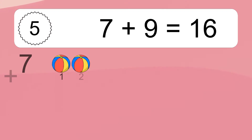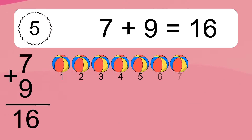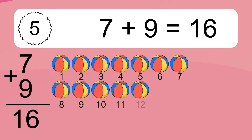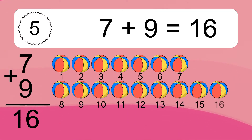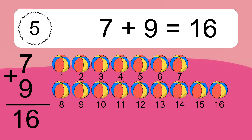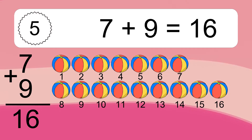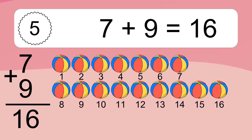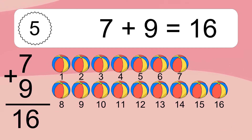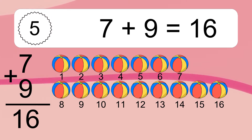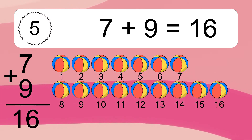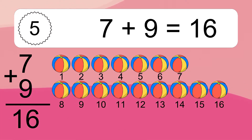7 plus 9 equals what? 7 plus 9 equals 16. Let's count it. 1, 2, 3, 4, 5, 6, 7, 8, 9, 10, 11, 12, 13, 14, 15, 16.